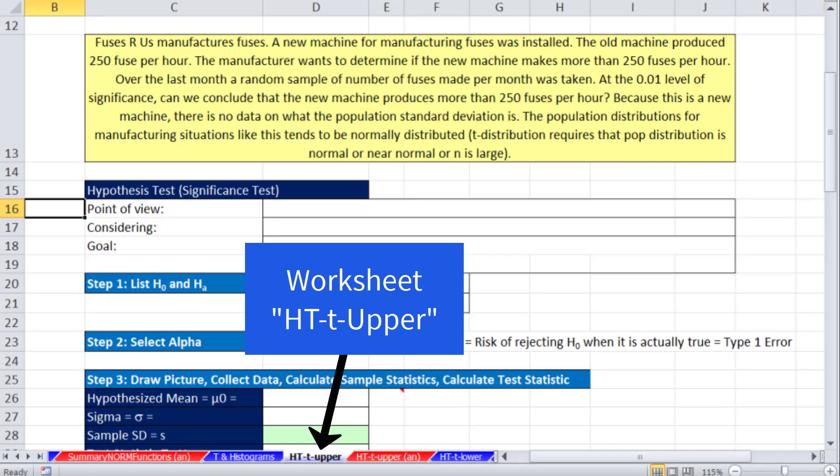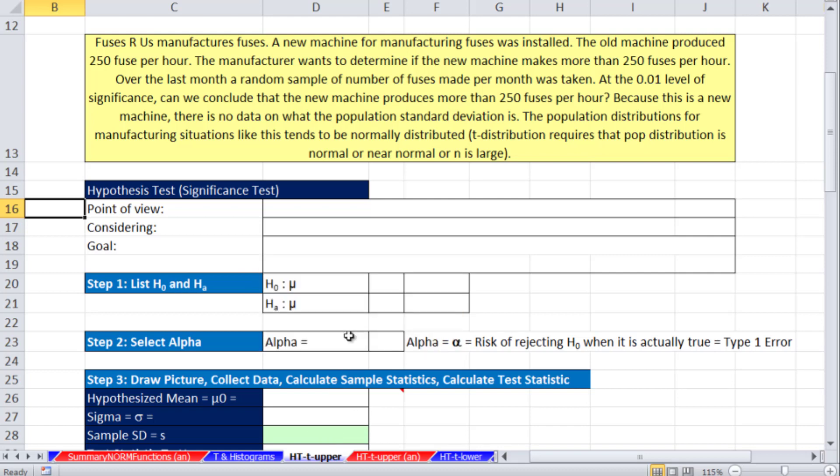So far in chapter 9, we've been doing hypothesis testing when sigma is known, and we've been using the z-distribution. Now we want to see what happens when sigma is not known, and we're going to use the t-distribution. Here's our first example.